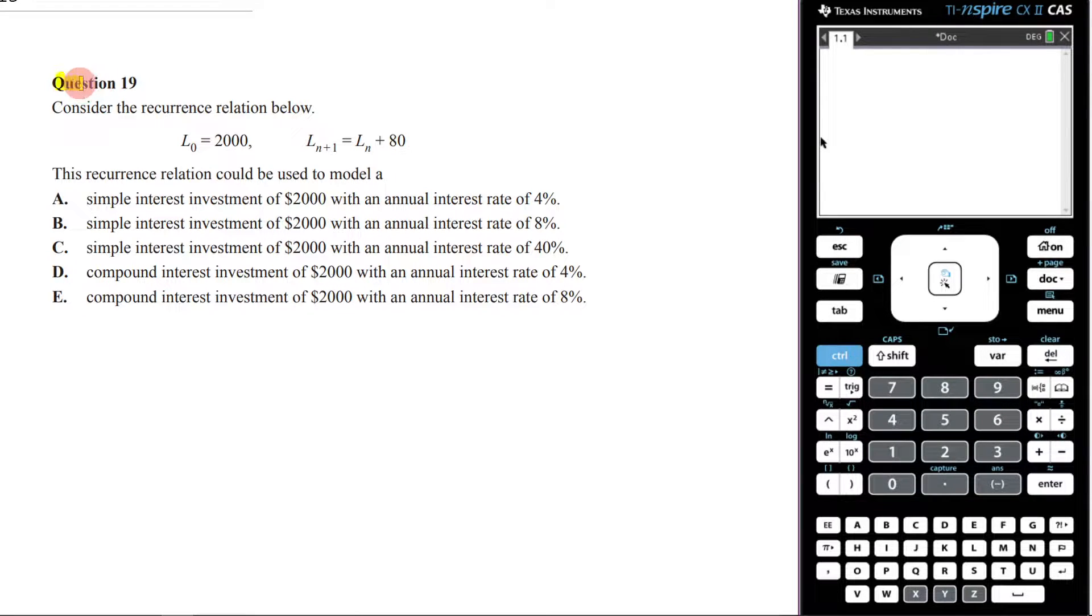Alright, let's answer this question here. It is question 19. It says, consider the recursion relation below. So as you can see here, we've got an initial amount of $2,000, and then we're simply adding 80 each time.